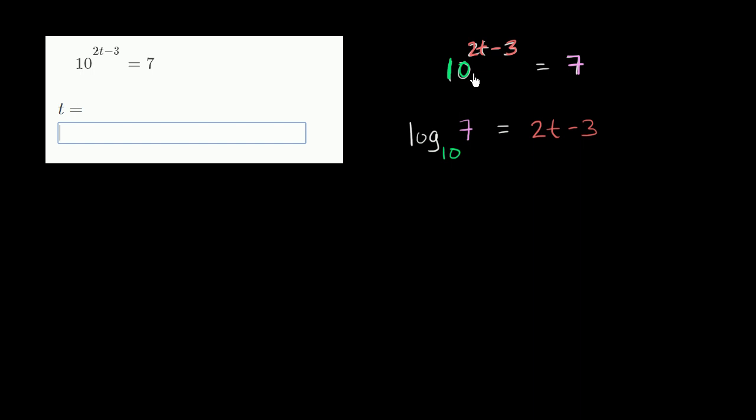Let's just make sure that makes sense. This is saying 10 to the 2t minus 3 is equal to 7. This is saying that the power that I need to raise 10 to to get to 7 is 2t minus 3. Or 10 to the 2t minus 3 power is equal to 7. So these are equivalent statements.